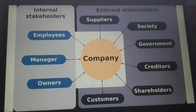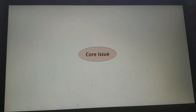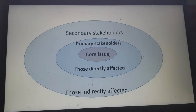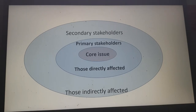The company deals with stakeholders in various layers. The first layer is primary stakeholders — those who are directly affected by whatever core issue or project you want to start. The second layer is secondary stakeholders, who are indirectly affected — indirect beneficiaries.